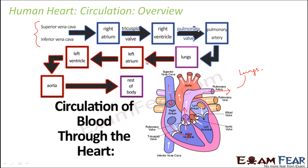This oxygenated blood then enters the left auricle through the pulmonary vein. From the left auricle it enters into the left ventricle through the bicuspid or mitral valve. Once it enters the left ventricle, it goes into the aorta through the aortic valve, and from the aorta it travels through the arteries to the rest of the body. This is how blood circulation takes place inside the heart.